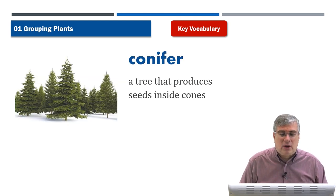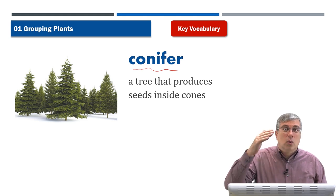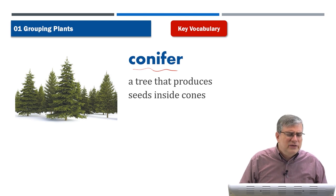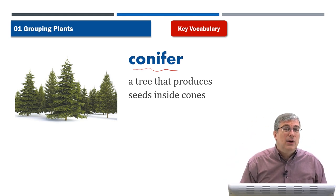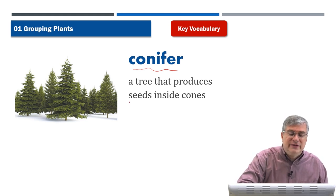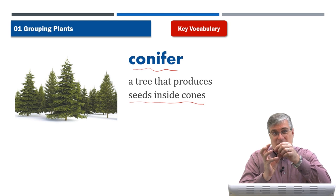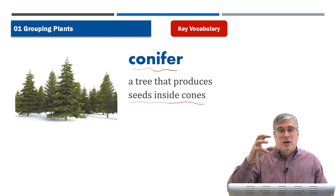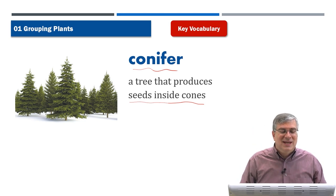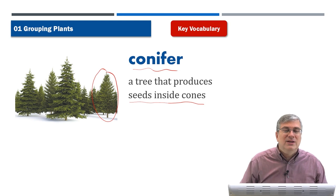Next we have 'conifer.' You've probably seen many conifers, especially if you live in the northern or southern parts of the world. There are not too many conifers in the hot regions around the equator. A conifer is a tree that produces seeds inside cones. Pine cones are the most famous — inside the cone there are seeds, and the pine cone will fall off the tree and the seeds will fall out.